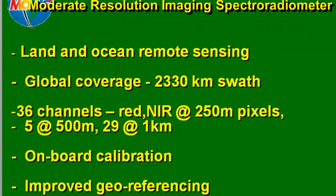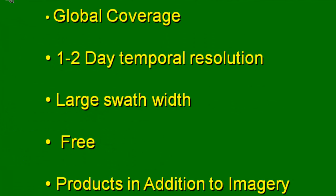Compared to the AVHRR sensor, MODIS has sensor detectors optimized for both land and ocean remote sensing. It has 36 bands: the red and near-infrared bands at 250-meter pixels, reflective bands at 500-meter pixels, and many other bands at 1-kilometer pixel size. It's a vast improvement over AVHRR because we have onboard calibration and improved geo-referencing.